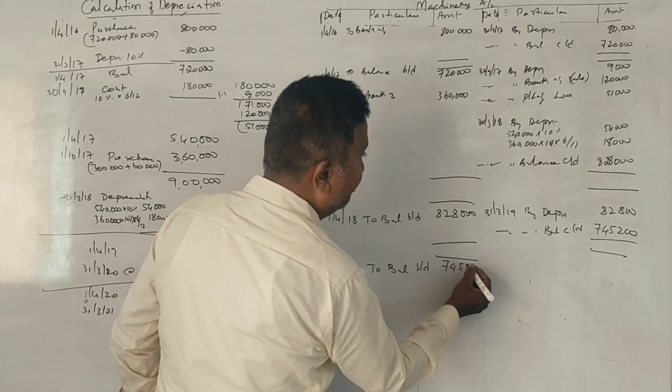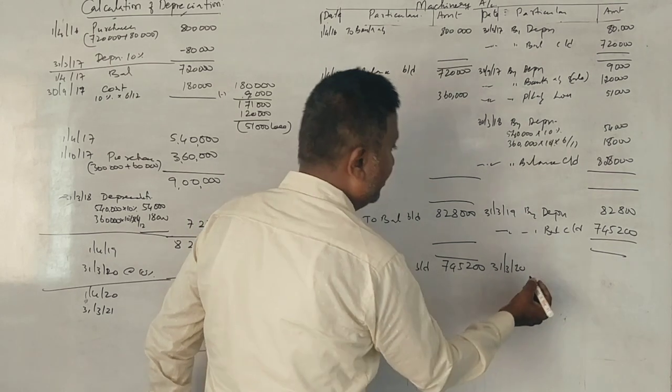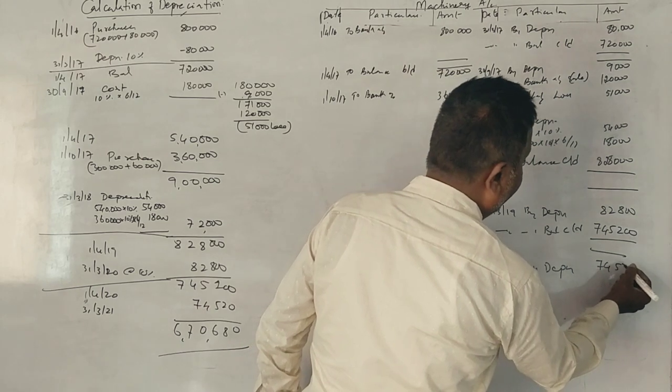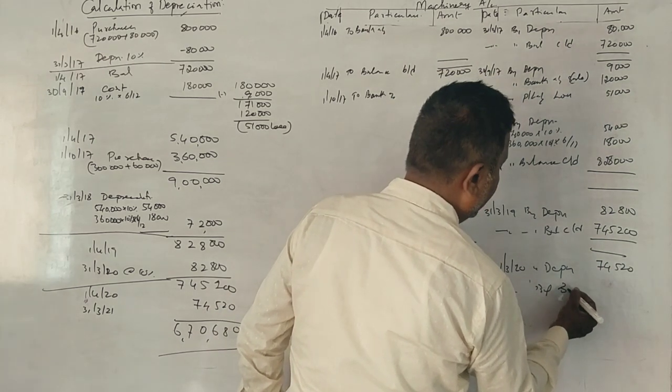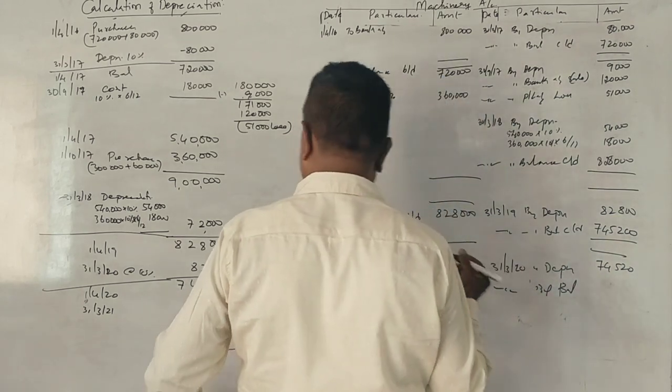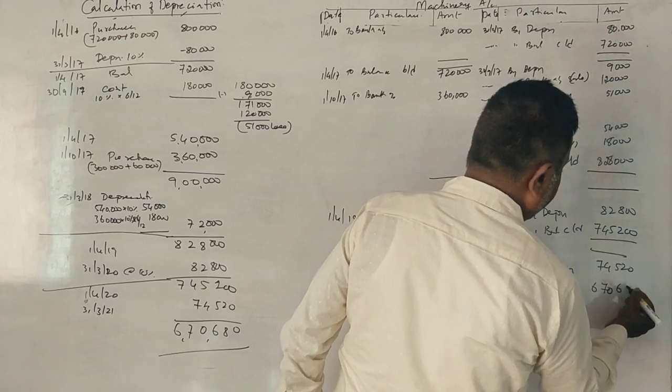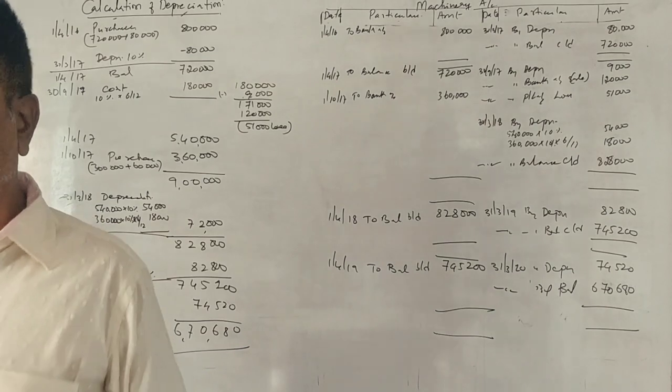31st March 2020, depreciation $74,520. Balance $670,680. The final balance is $670,680.